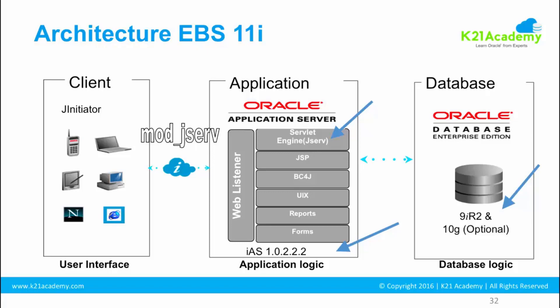Whereas now in WebLogic, you use mod_WL_OHS, which is a module in WebLogic for OHS. These are the major differences between 11i and R12.2. Another key difference is that in 11i there was a single file system on the application tier, whereas in EBS 12.2 you have a dual file system. We will cover that when we cover the file system, but these are the technology-level architectural differences.